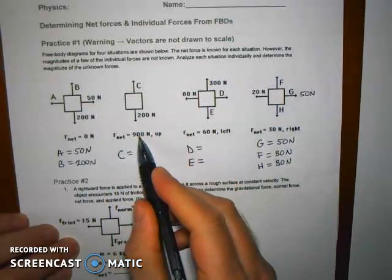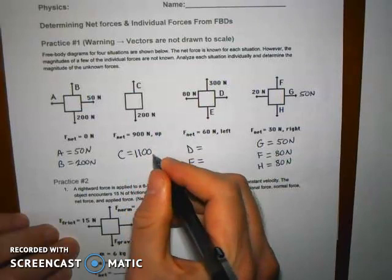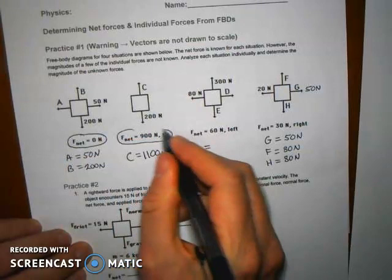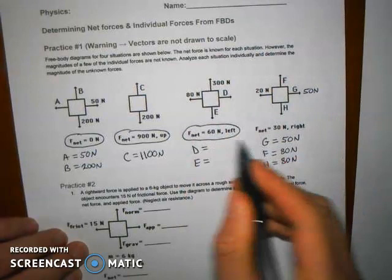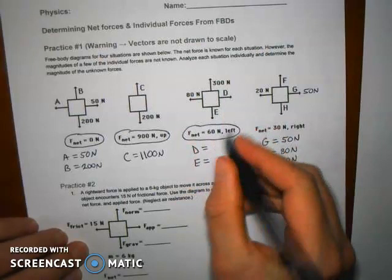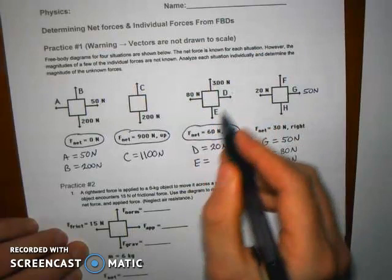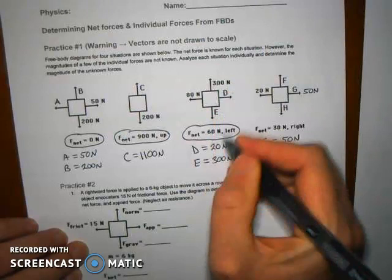In the second situation, the net force is 900 newtons up and you already have 200 newtons down, so C has to be 1100 newtons — that value has to be 1100 newtons so that you get that net force. The net force is the key to determining the missing individual force vectors. In the third object, the net force acts to the left. Therefore, D has to be 20 newtons because 80 newtons minus 20 newtons gives you 60 newtons net to the left. If 300 newtons act up, E has to have the exact same value of 300 newtons acting down so they cancel.